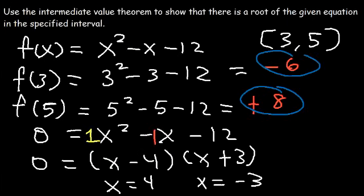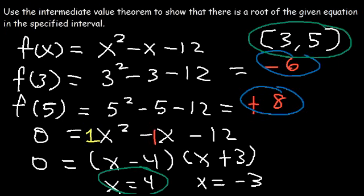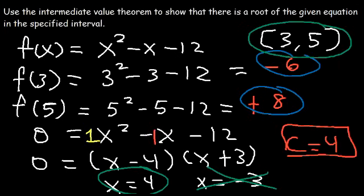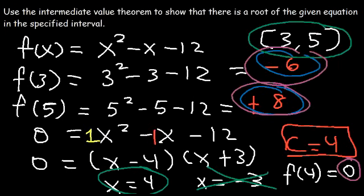Which of these two values is between 3 and 5? The answer is 4. Negative 3 is not between positive 3 and 5. So the answer for this problem is c equals 4. As we can see, f(c), or f(4), is equal to 0. Since 0 is between the y values of negative 6 and 8, the x value 4 is between the x values 3 and 5. That's the main idea behind the intermediate value theorem.